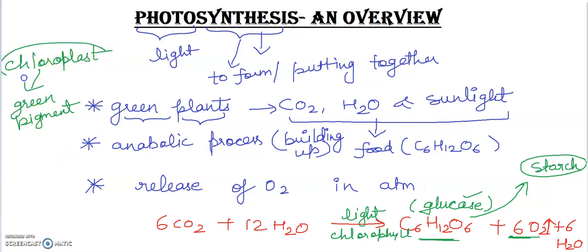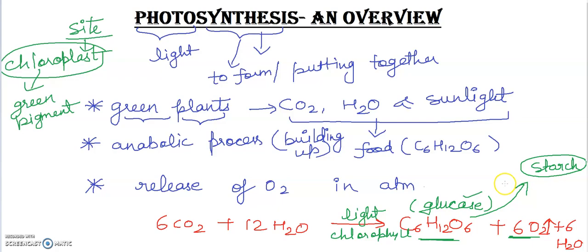The chloroplast is the site of photosynthesis — where this process takes place. If any question comes in your exam asking to name the site of photosynthesis, you have to write chloroplast. The leaves keep producing glucose, and the glucose molecules formed are converted into starch as fast as they are produced. There are simple starch tests which can be done in the laboratory as a confirmation test.